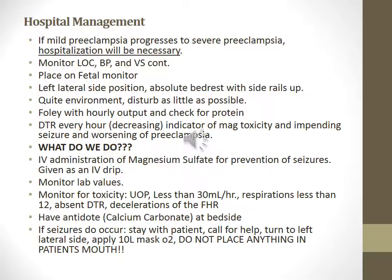Hospital management: if mild preeclampsia progresses to severe preeclampsia, hospitalization will be necessary. Monitor the pregnant mother's level of consciousness, blood pressure, and body responses continuously. Place her on a fetal monitor in left lateral side position, absolute bed rest with side rails up, in a quiet environment with as little disturbance as possible. Insert a Foley catheter for hourly outputs and check for protein. Assess deep tendon reflexes every hour — decreasing DTRs are an indicator of MAG toxicity and impending seizures. Administer IV mag sulfate drip for prevention of seizures. Monitor lab values and for toxicity signs: urine output less than 30 mL/hour, respirations less than 12, absent DTRs, and decelerations of fetal heart rate. Have calcium gluconate as an antidote at the bedside. If seizures occur: stay with the patient, call for help, turn to the left lateral side, apply 10 liters O2 by mask, and do not place anything in the patient's mouth.